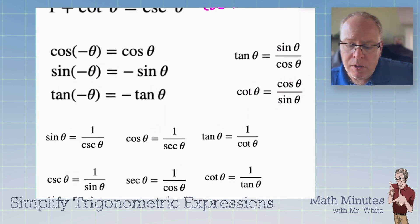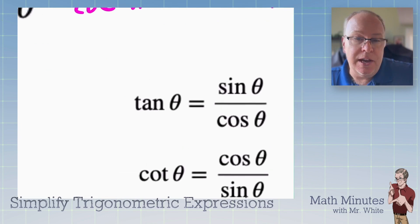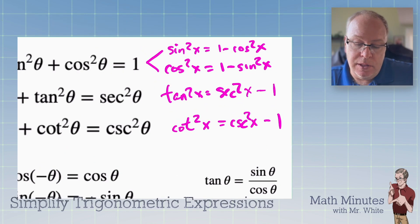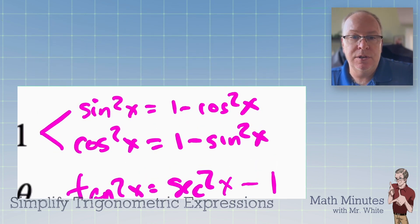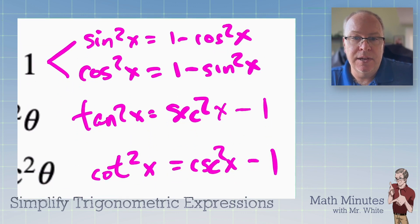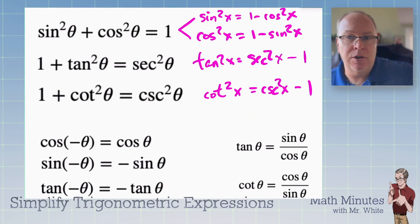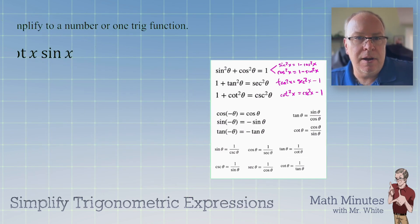So make sure you have these memorized. Maybe not all of these, certainly tan = sin/cos. And I would strongly recommend you memorize these two. These are some of the Pythagorean identities as well as these guys. You should recognize them and know to look at your formula sheet. Alright. Enough. Let's get to some of these problems.